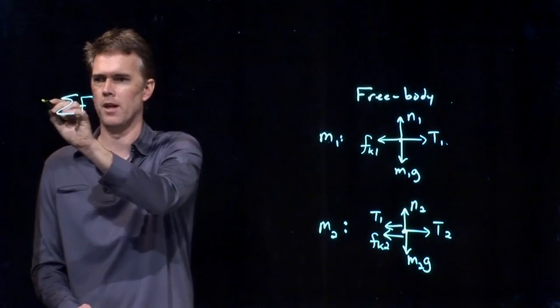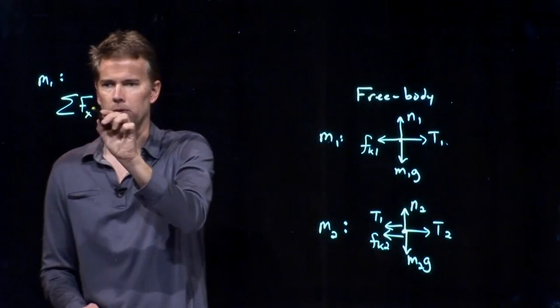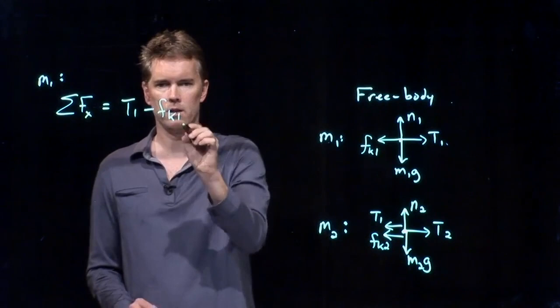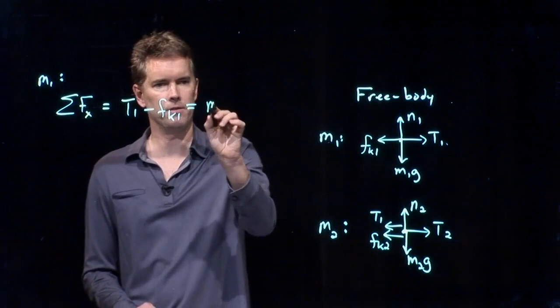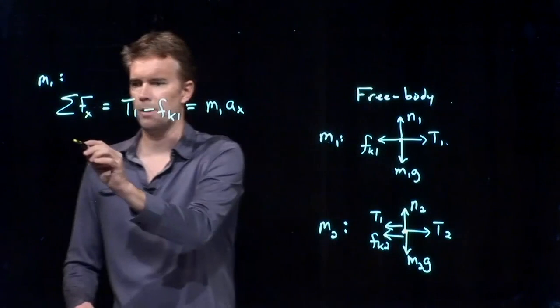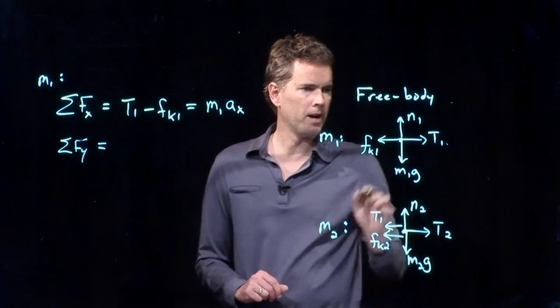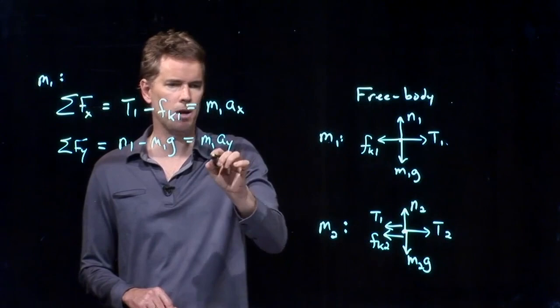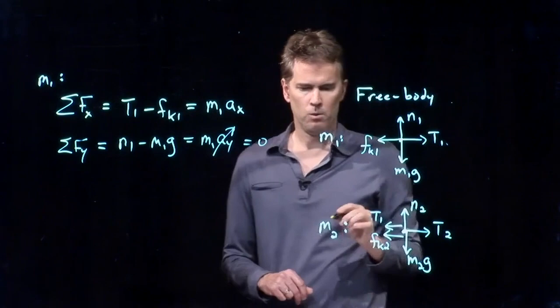So we have our free body diagram. We want to write down the sum of the forces and we can break it into components. And we'll do the x components on mass M1. What do we have? We have T1 going to the right, we have FK1 going to the left. That's equal to the mass times the acceleration in the x direction. What about the sum of the forces in the y direction? We've got N1 going up, we have M1G going down. That's equal to the mass times the acceleration in the y direction, but we know that's zero.